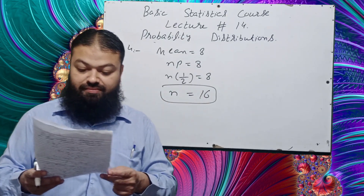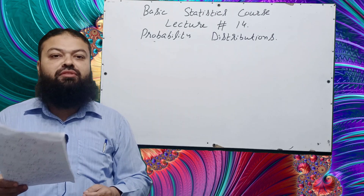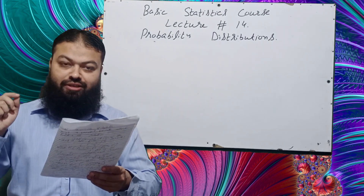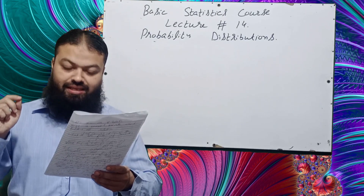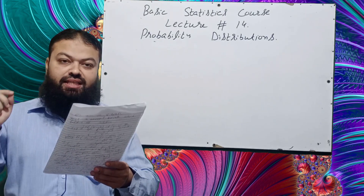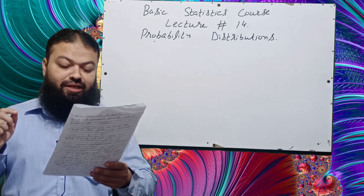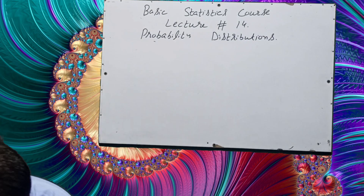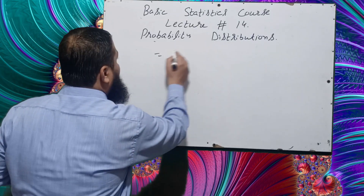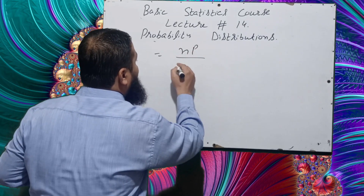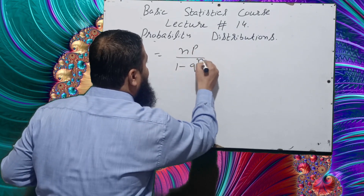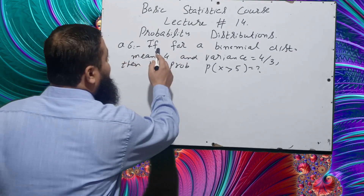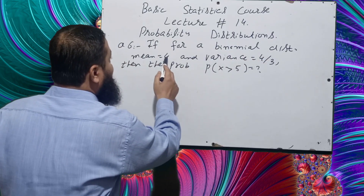Question number five: if a random variable X follows a binomial distribution with parameters n and P, then the mean of the truncated binomial distribution truncated at X = 0 is NP over (1 − Q^n).